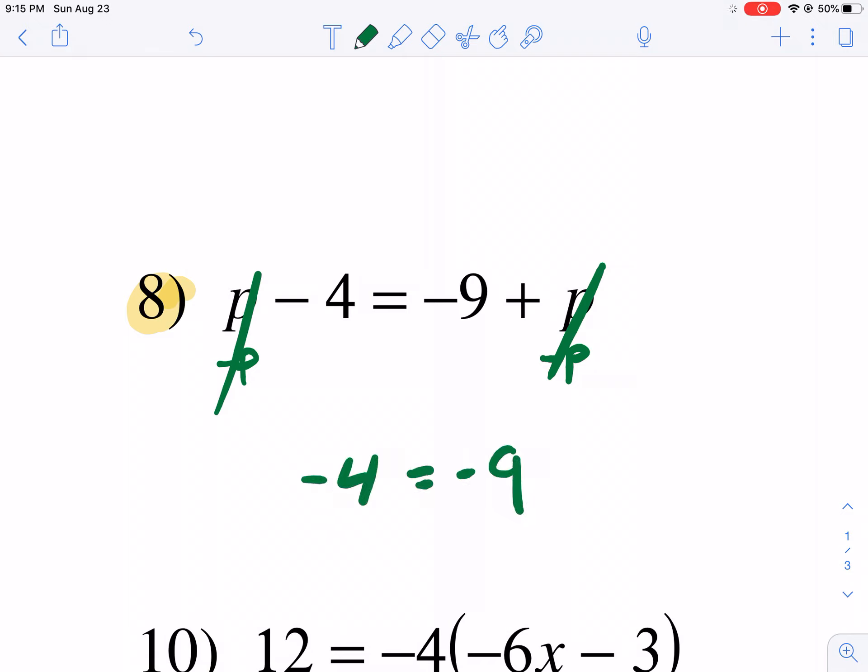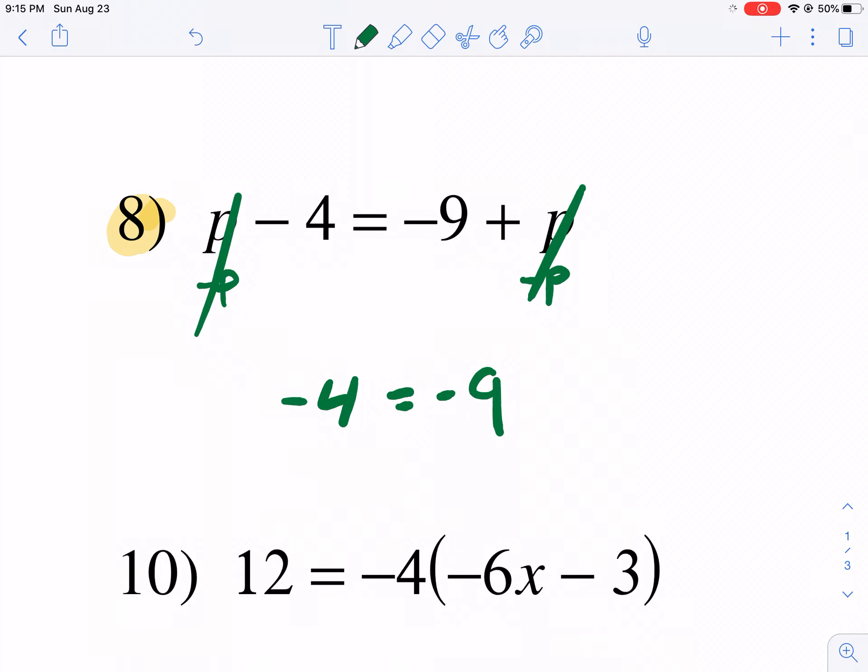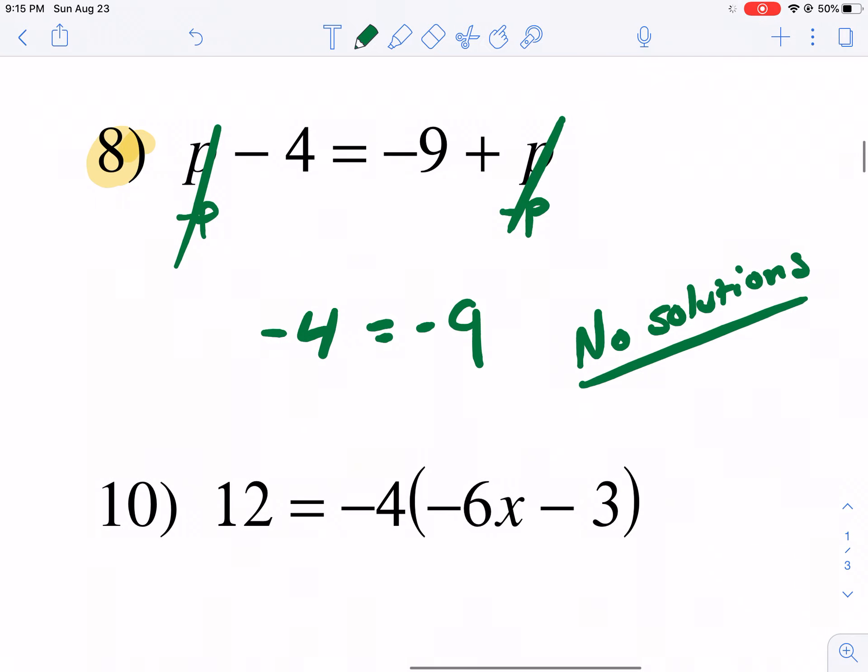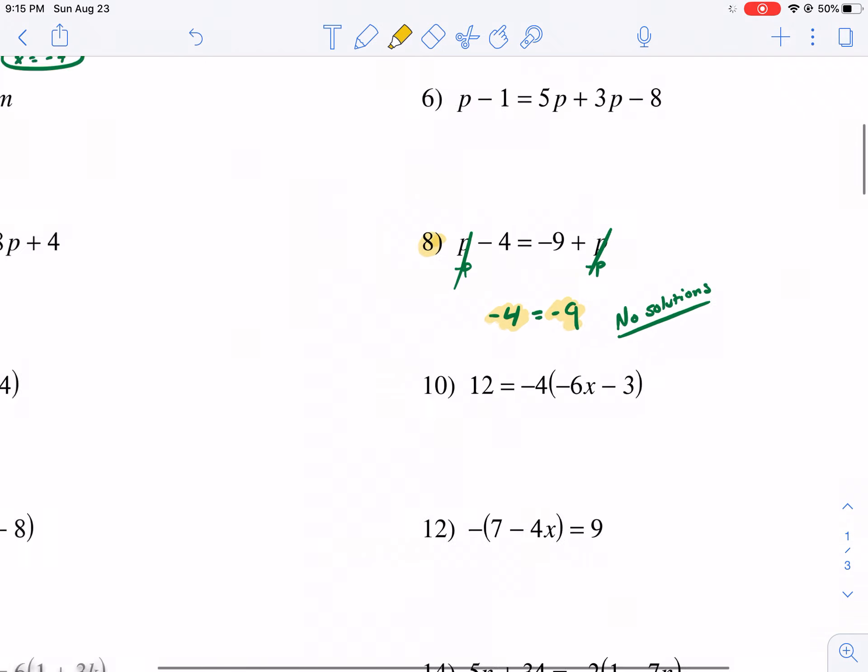What do you do from here? Do you add 4 to both sides? Do you add 9 to both sides? You can't do either. This is no solutions. You might be asking why. Why is this no solutions? This is no solutions because it's making an untrue statement. Negative 4 is not equal to negative 9. So anytime you have a situation where you have the same variable with the same coefficient on either side, and only that with some other constants being added or subtracted, it's going to be no solution.